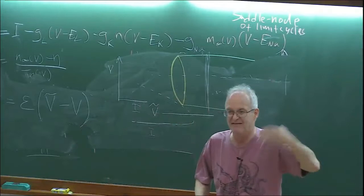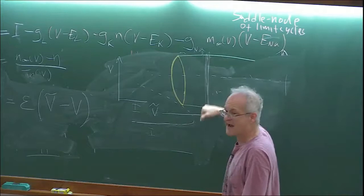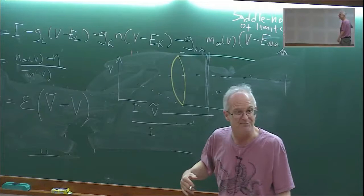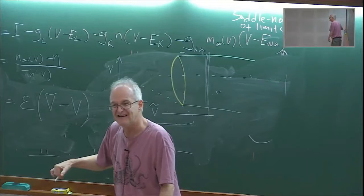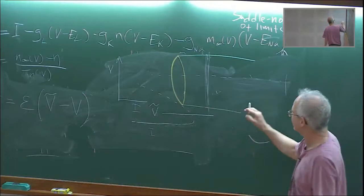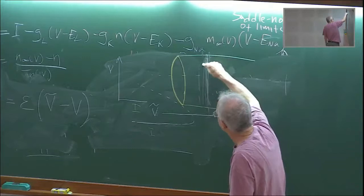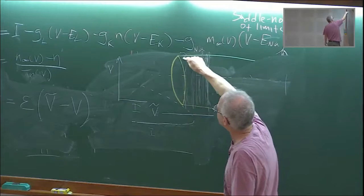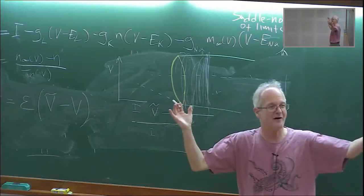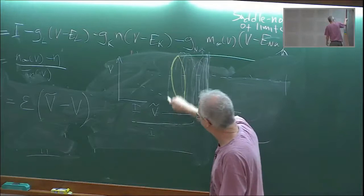The maximum and minimum of the limit cycle lies strictly above V tilde. So now V is going to be bigger than V tilde, and I is going to start decreasing. You're going to go up here, spike repetitively, and slowly meander down. What's going to happen is you're going to hit the homoclinic, and once you hit the homoclinic there's no more limit cycle attractor, and you have to collapse back down. Then we start the process all over again.